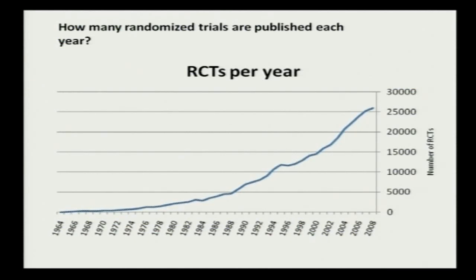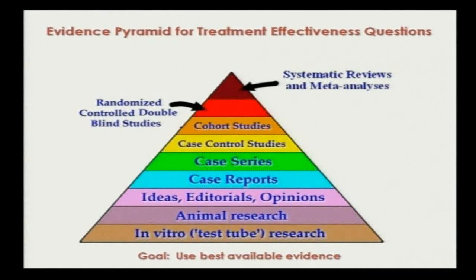There has been an exponential increase in medical literature over the last few years, which makes us wonder whether all of it is right. Obviously not — if everything was black and white we wouldn't be discussing research methodology. We have to critically appraise and separate the trash from the good, and use the good to change practice. Systematic reviews and meta-analysis form the tip of this evidence pyramid — they are at the top and should be considered the best level of evidence, but only if they have been carried out in the best way.